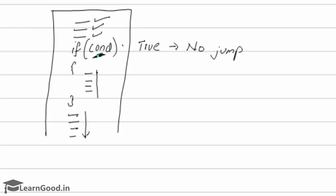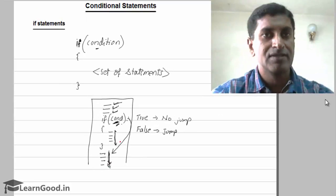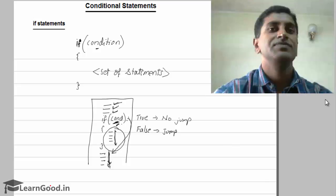If the condition is true, it executes the first, second, and third statements, then proceeds with the rest of the program. But if the condition is false, there is a forward jump. It will execute the first, second, and third lines, check the condition, and if false, it will not execute the set of statements — it jumps directly to the next part of the program.